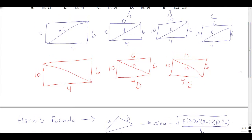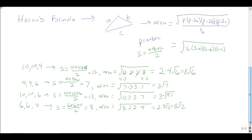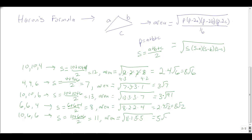For triangle with sides 10, 6, 6: S = (10 + 6 + 6) / 2 = 11. Area = sqrt(11 × 1 × 5 × 5) = 5√11.